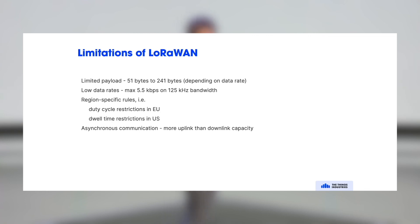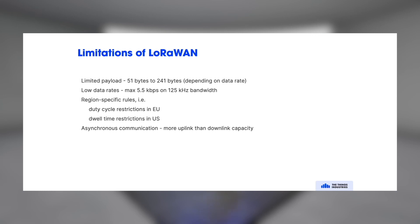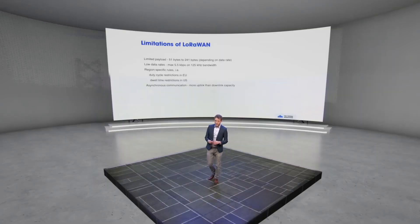Finally, the communication is asynchronous. Your gateway is a device that also has to comply with spectrum regulations — a gateway in the EU also has a duty cycle, which limits how many messages it can send. This means that most of the traffic, 90 percent or more, is uplink — from the end device towards the network — whereas downlink is typically limited.